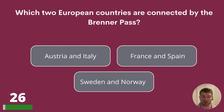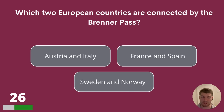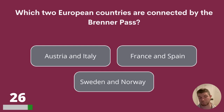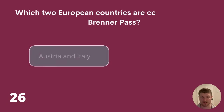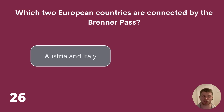Question 26. Which two European countries are connected by the Brenner Pass? Austria and Italy, France and Spain, or Sweden and Norway? The answer is Austria and Italy.